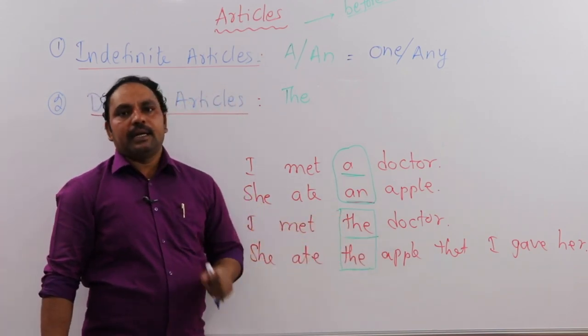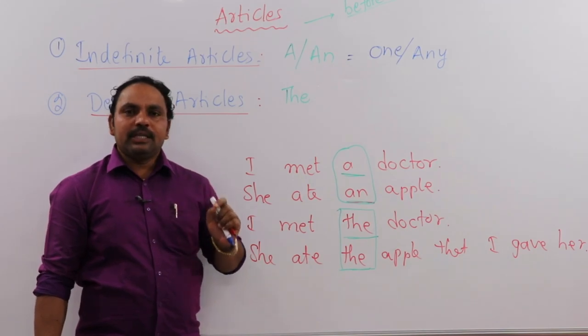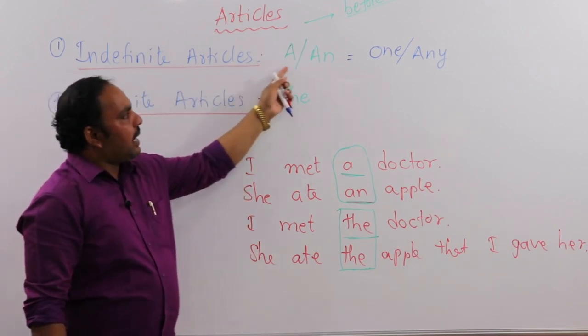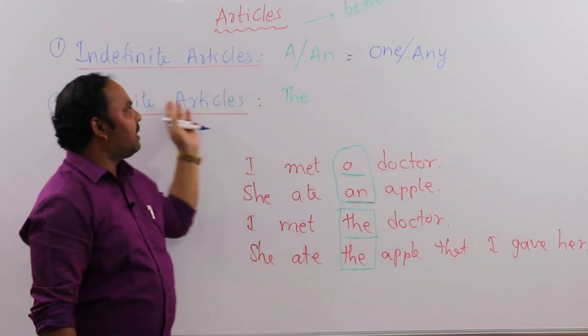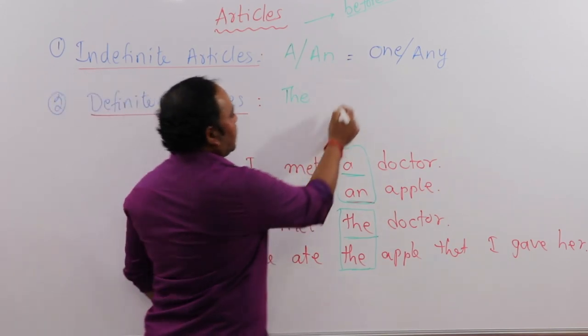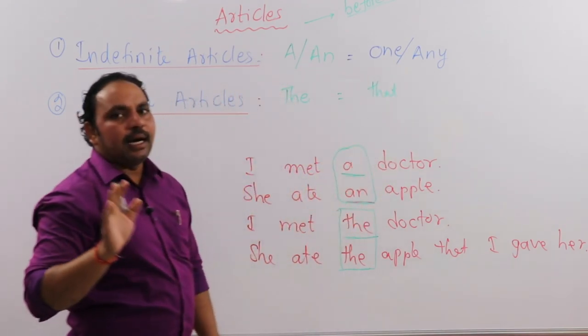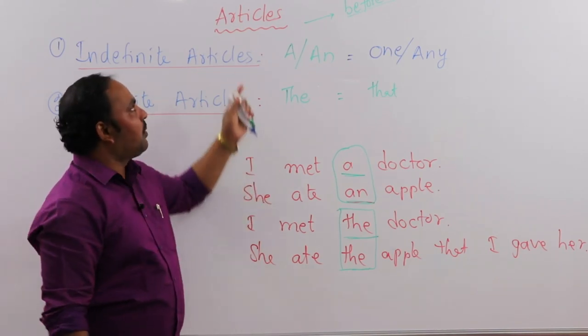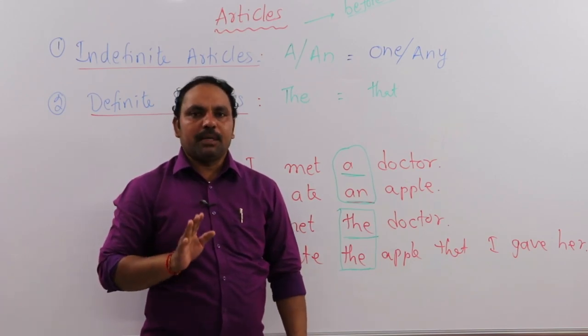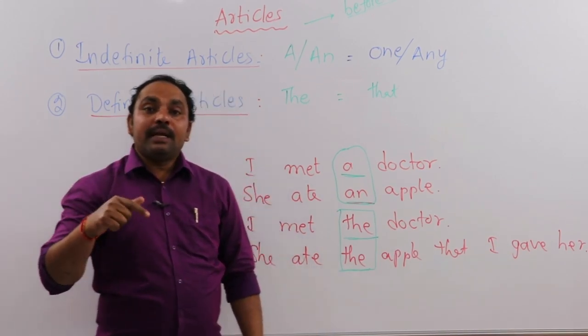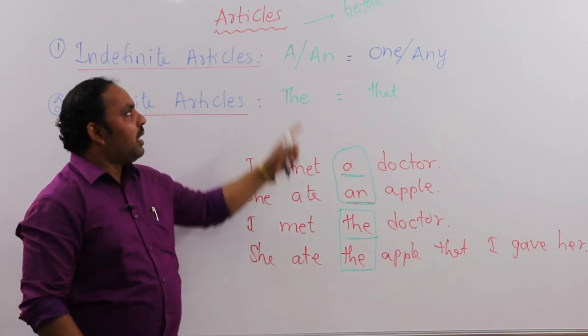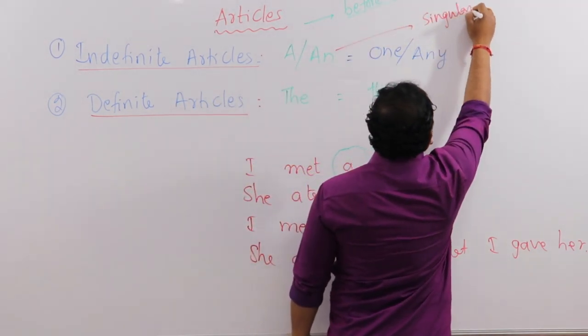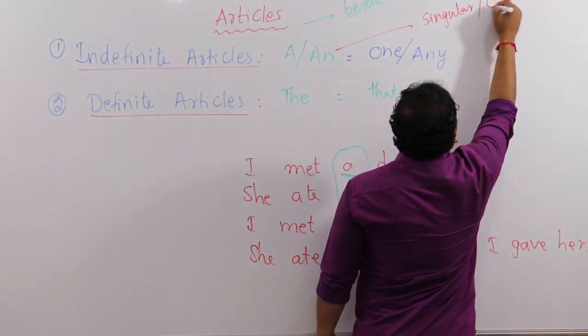So these are the two types of articles that are there in English. The indefinite articles 'a' and 'an' mean 'one' or 'any.' The second one, definite article 'the,' is equal to 'that' - meaning that specific thing.